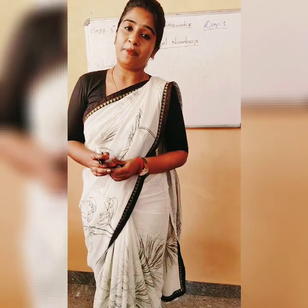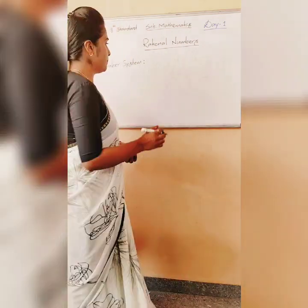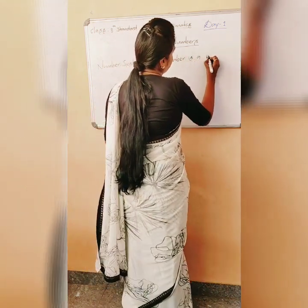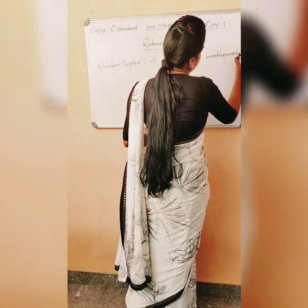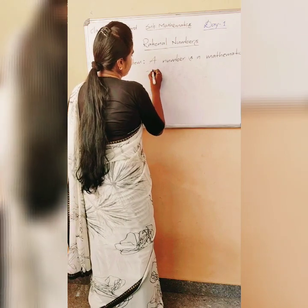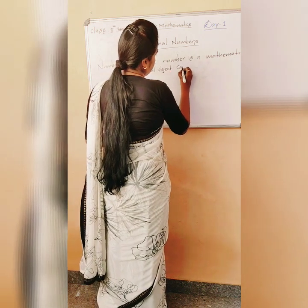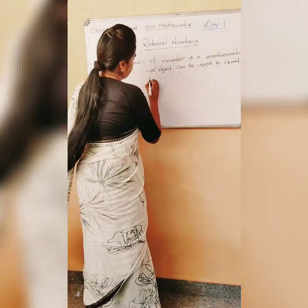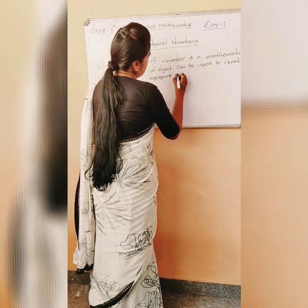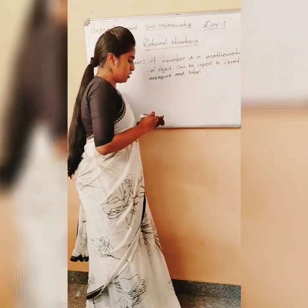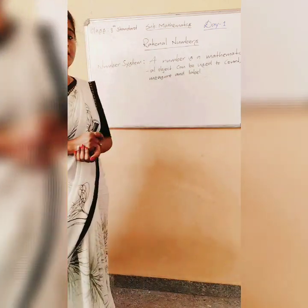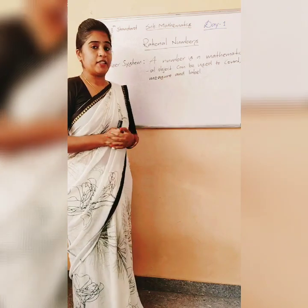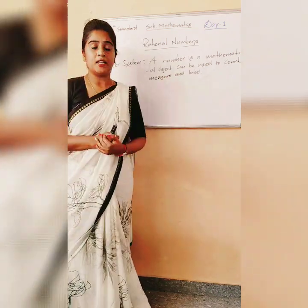A number is a mathematical object that can be used to measure, label, and count things. So students, if you understand the definition here — a number is a mathematical object that can be used to count, measure, and label. We are going to deal with the number system and formulating things as well as labeling parts of things.